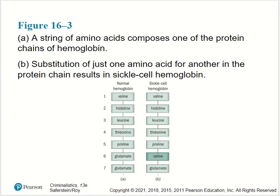A string of amino acids composing one of the protein chains of hemoglobin is shown on the left, and on the right, the substitution of just one amino acid for another in the protein chain results in sickle cell anemia — sickle cell hemoglobin. The replacement of a nucleotide in DNA eventually leads to a valine amino acid being placed in the sequence instead of a glutamate.